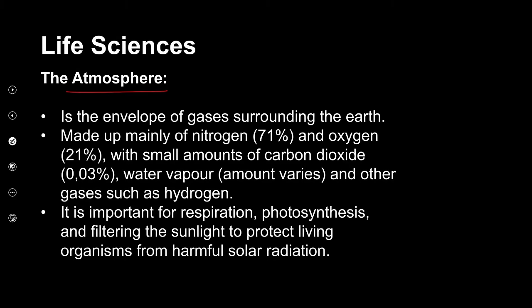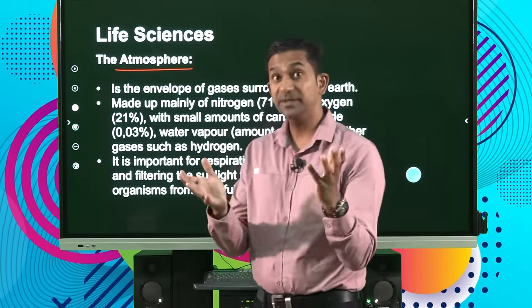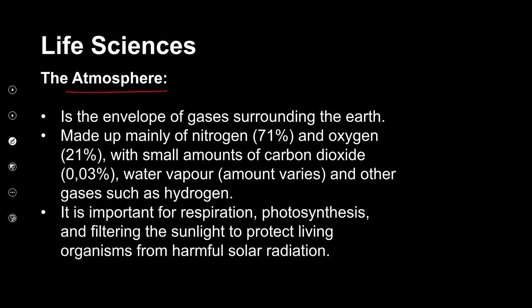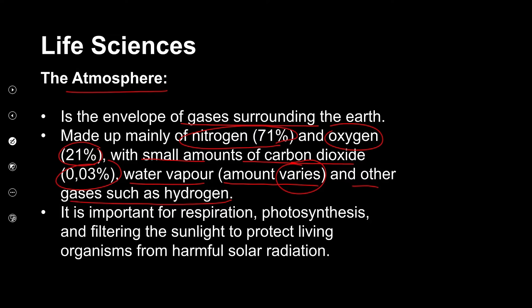When we look at the atmosphere, it is important to understand what it is made up of — predominantly gases. Surrounding the earth, we have a layer of air called the atmosphere. The gases are mainly made up of nitrogen, which is about 71%, oxygen, which is about 21%, with a small amount of carbon dioxide. We know that water vapor also plays an important part of our atmosphere, and we also have a buildup of other gases that make a very small percentage.